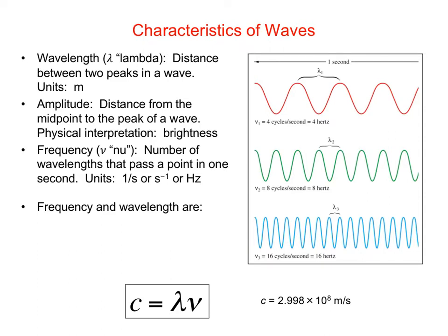The units on frequency are one over seconds - how many wavelengths pass per second. Sometimes we write 1/s, sometimes we write s^-1, and you've probably seen this unit before: this is a hertz. A hertz is the same thing as 1/s, which is the same thing as s^-1.